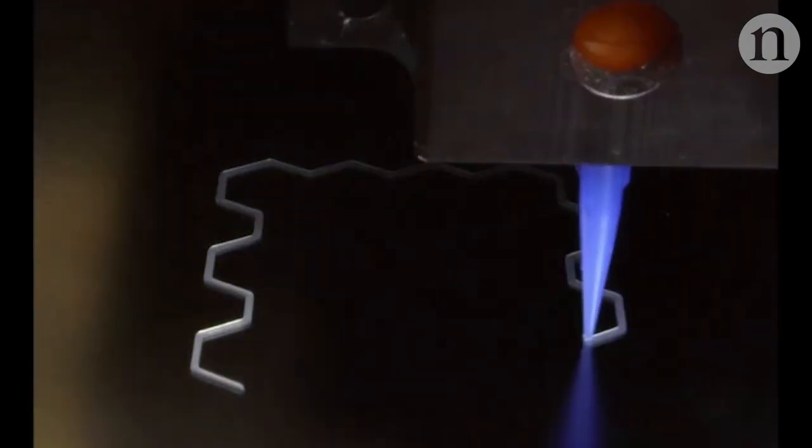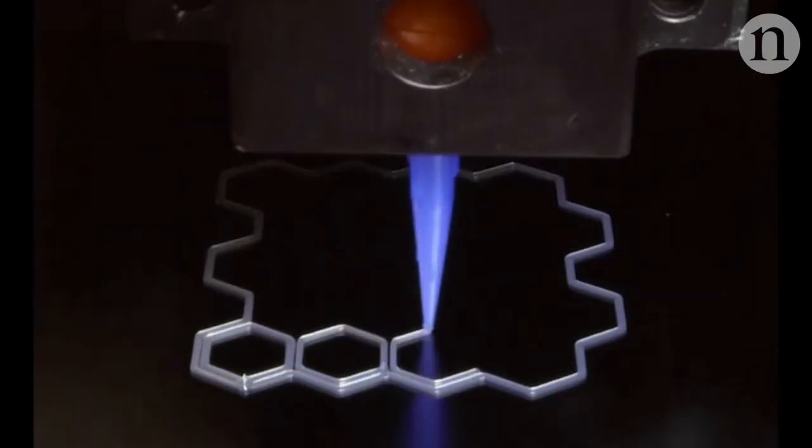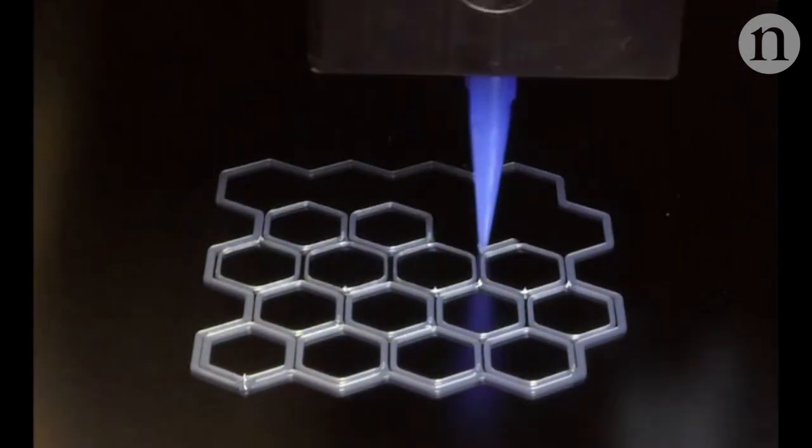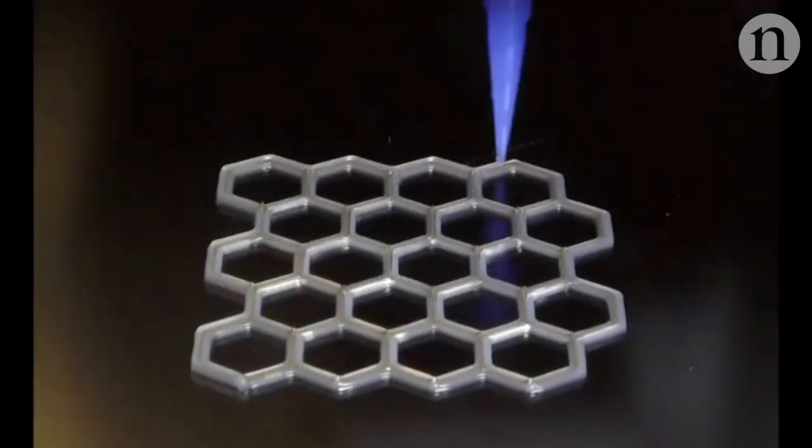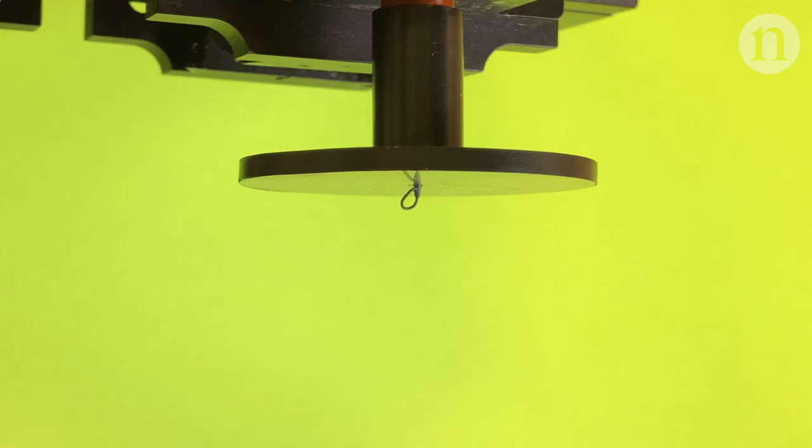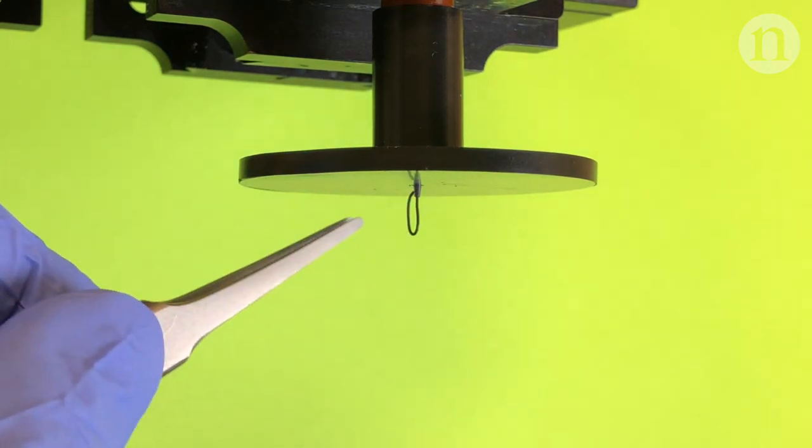This material can be 3D printed and scientists use magnets to change its shape. The technique uses a soft silicon rubber embedded with tiny particles of iron.